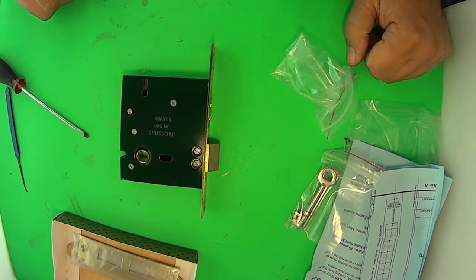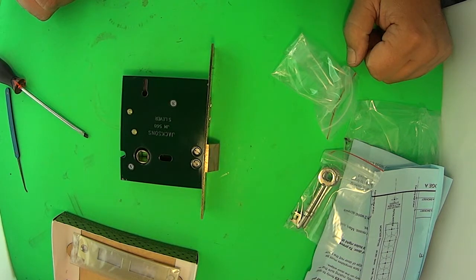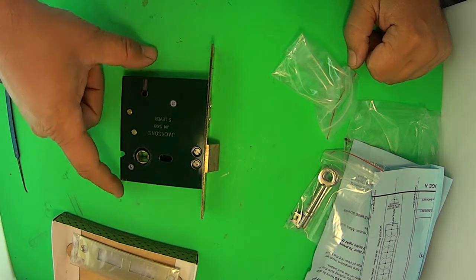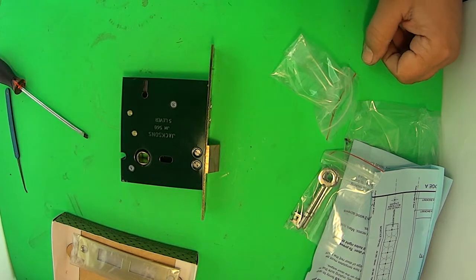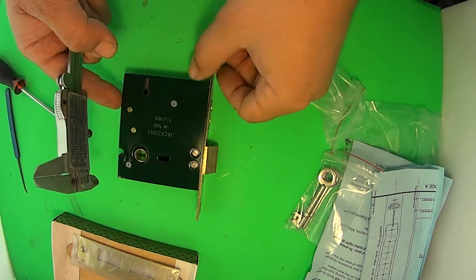So that's the Jackson JM 560 5 lever mortise lock, 60mm backset. I'll give you a few sizes now. I've shown you how to redo the latch.